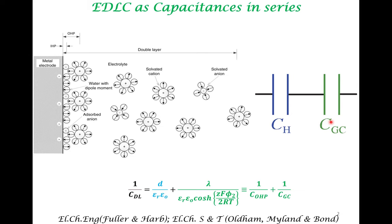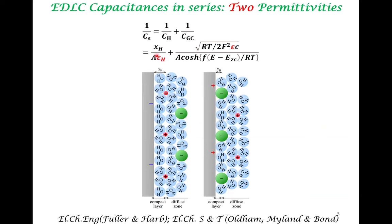We have already discussed the formula for capacitance in series. The formula from the Helmholtz model and the formula from the Gouy-Chapman model are combined. The capacitance of the double layer in the Stern model is obtained by combining Gouy-Chapman capacitance and Helmholtz capacitance in series. Plugging in the formula for the Debye length, you obtain the full formula for the double-layer capacitance.